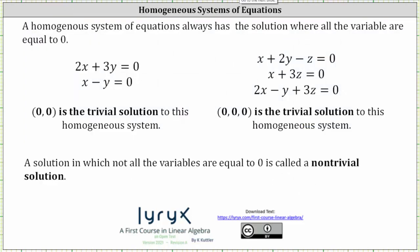A homogeneous system of equations always has the solution where all the variables are equal to zero. For the first system on the left, because we have two unknowns, (0, 0) is the trivial solution. Notice when x is zero and y is zero, both equations are satisfied. For the system on the right, because we have three variables, the ordered triple (0, 0, 0) is the trivial solution. Notice how when x, y, and z are all zero, all three equations are satisfied.